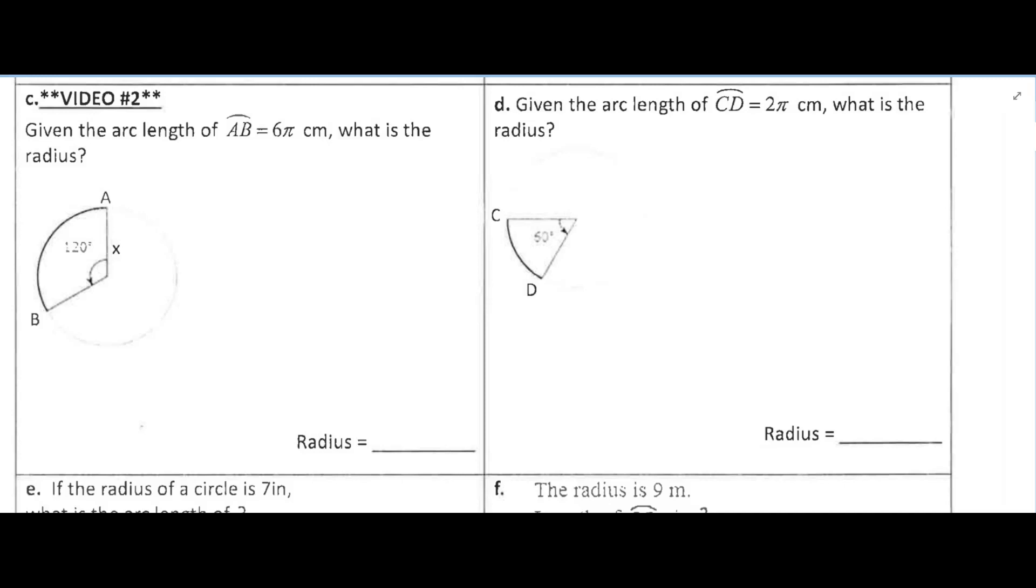In this video we are still in chapter 6. We're talking about circles. This is section 6.7 on arc length, and we're going to look at example 1, part C.